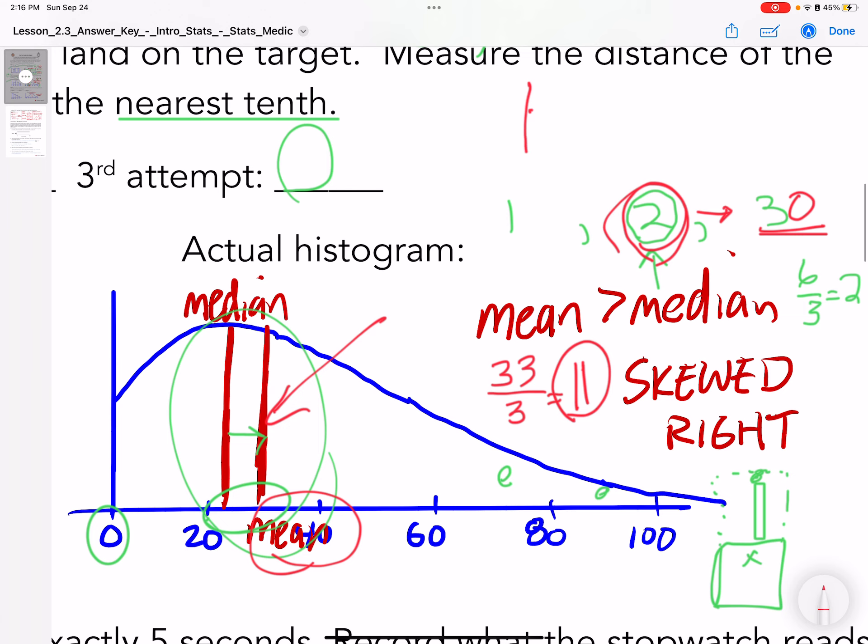So the mean is going to be to the right of the median when it's skewed to the right. When it's skewed to the left, the mean is going to be to the left, because the low numbers are pulling the mean to the left.